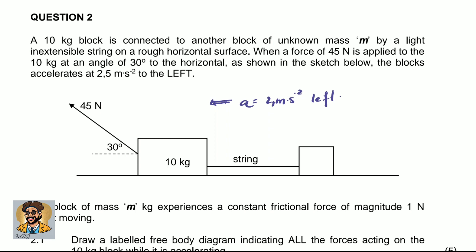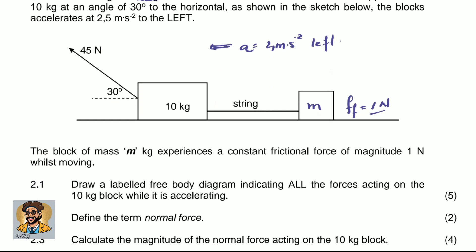We don't know the mass of the second block and we don't know the friction. However, there is friction because they say there is a rough horizontal surface. The block of mass M kilograms experiences a constant frictional force of magnitude 1 newton while moving. So the frictional force on block M is equal to 1 newton.